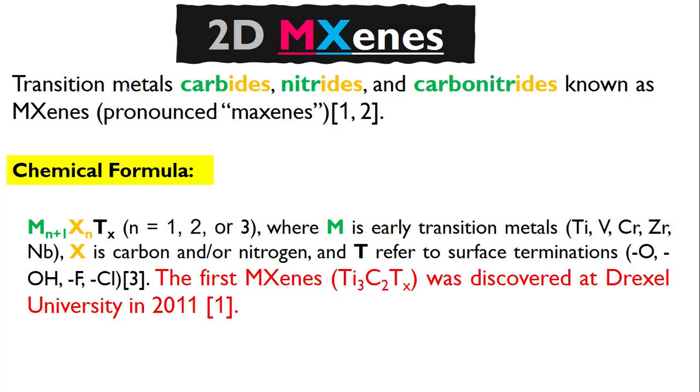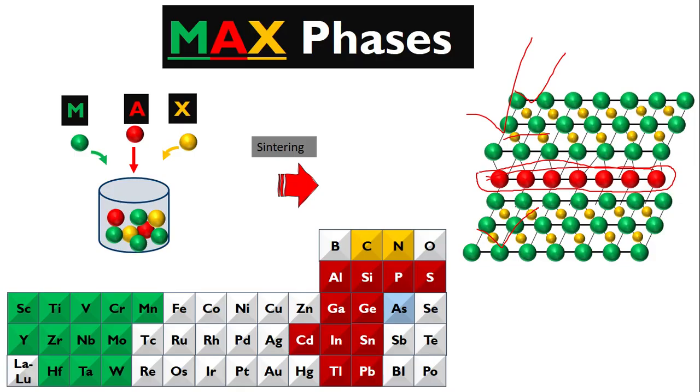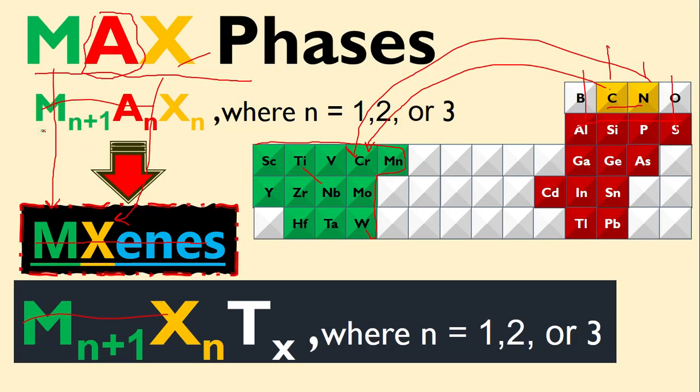MXenes, as I explained, are basically transition metal carbides, transition metal nitrides, or carbonitrides. We call them MXenes and it's pronounced like 'maxenes'. As I explained, this is the formula of MXene. You are not supposed to confuse this MAX formula with the MXene formula.